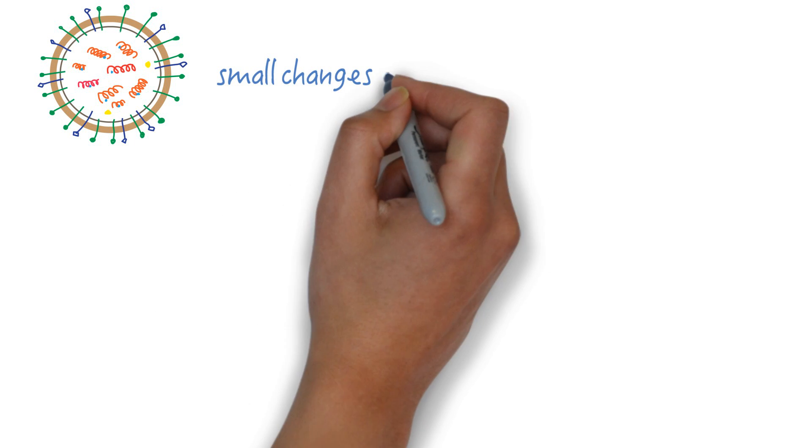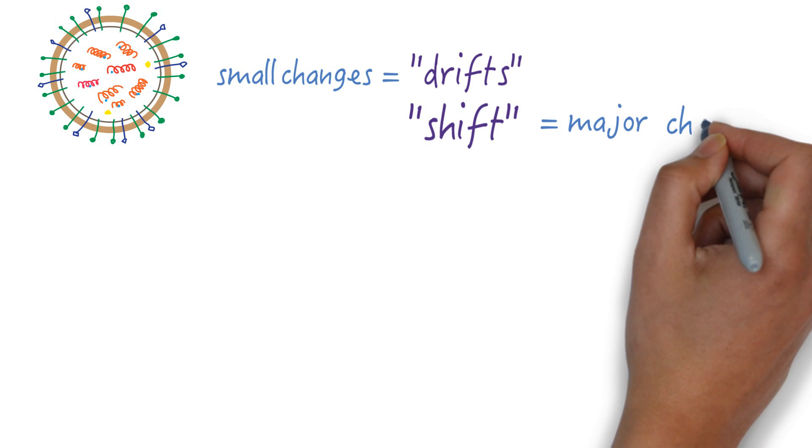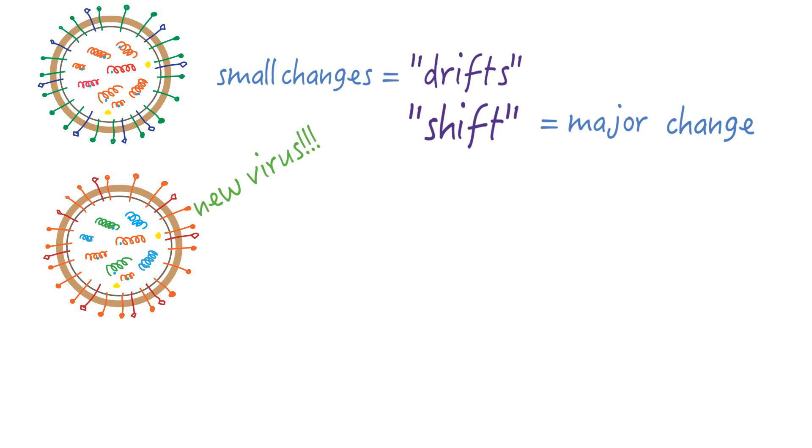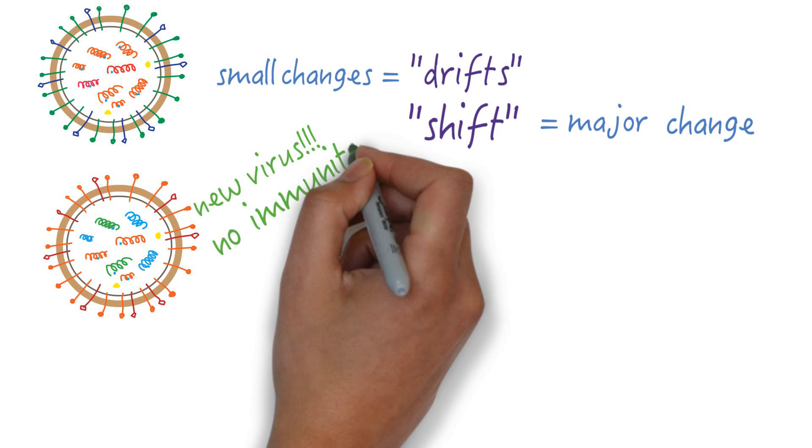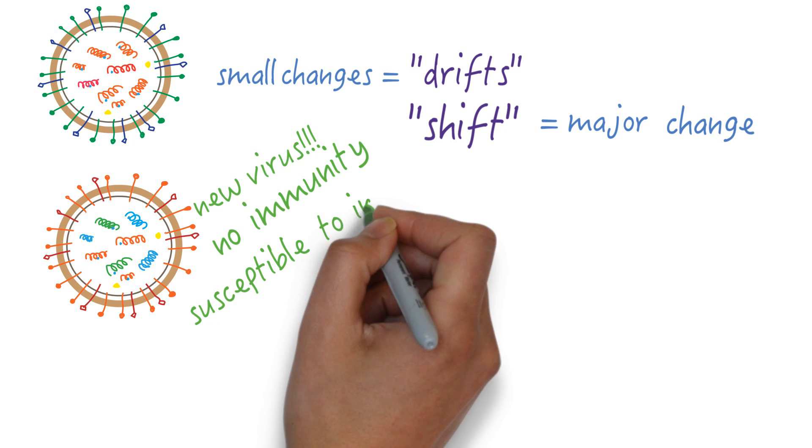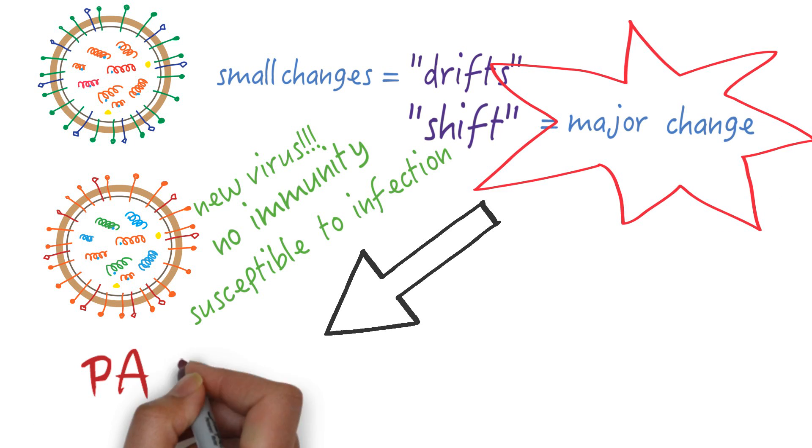Small changes are called drifts and they happen all the time. However, ever so often there's a shift or a major change of the virus. This leads to the creation of a completely new type of influenza virus which people have hardly any immunity to. When this happens, it's called a pandemic.